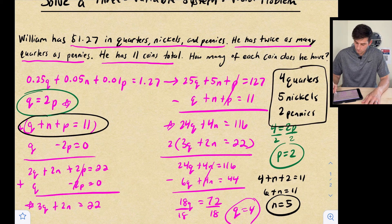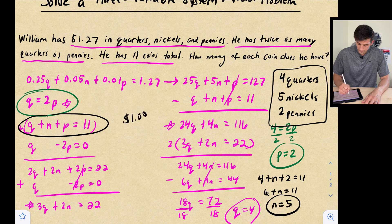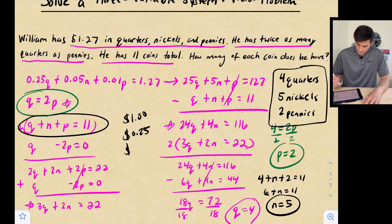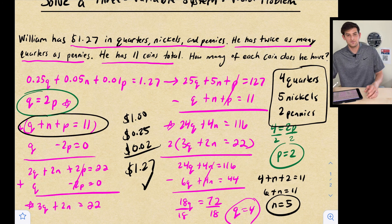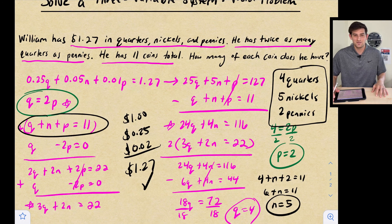So we can check that. 4 quarters would be $1. Five nickels would be 25 cents. And 2 pennies would be 2 cents. So we add those together and we do get $1.27. So that's how you can solve a word problem when you have three systems or one system with three variables and three equations.